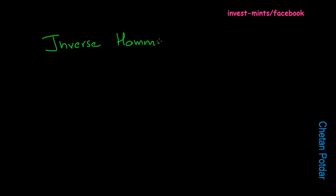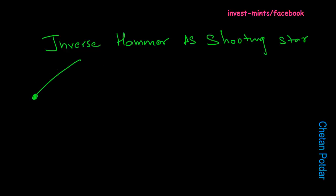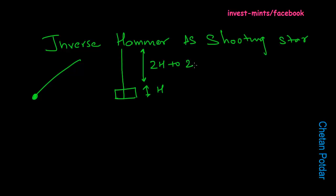The inverse hammer is also called the shooting star. A shooting star is basically a star falling from the sky — this is how it would look. So if you see this kind of formation at the top of the chart, we are looking at the price starting to tumble down. The ratio is the same: this is H, and this is 2H to 2.5H — the shooting star.